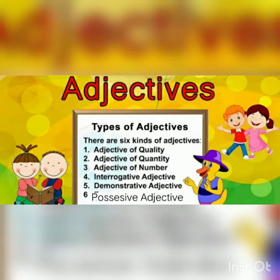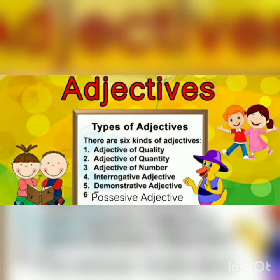Now, there are six types of adjectives. The first one is adjective of quality. The second one is adjective of quantity. The third one is adjective of number. The fourth is interrogative adjective. The fifth is demonstrative adjective. And the sixth one is possessive adjective. So these are all the types of adjectives, and we are going to do further explanation ahead.